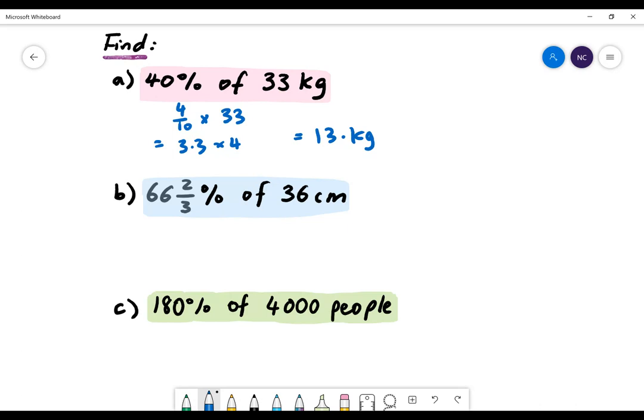Part b: 66 and 2 thirds percent multiplied by 36. 66 and 2 thirds percent is the same as 2 thirds. So we want to find 2 thirds of 36. To find this, we'll do 36 divided by 3, which is 12 multiplied by 2. So we'll have 24 centimeters.